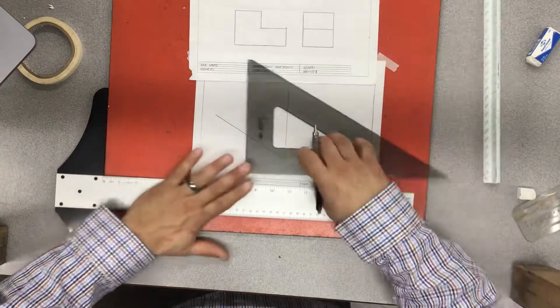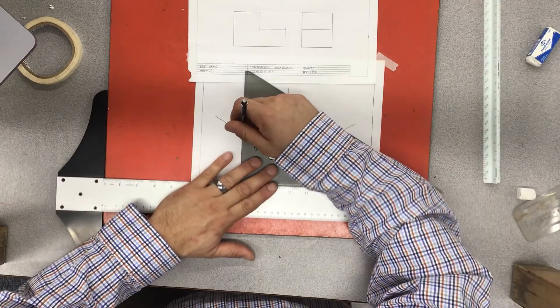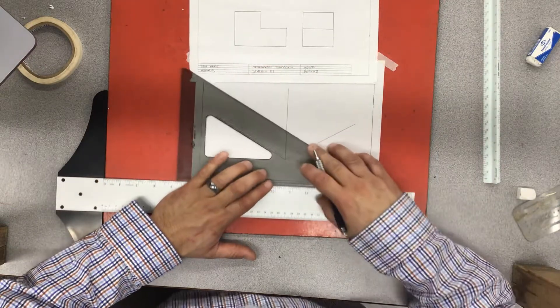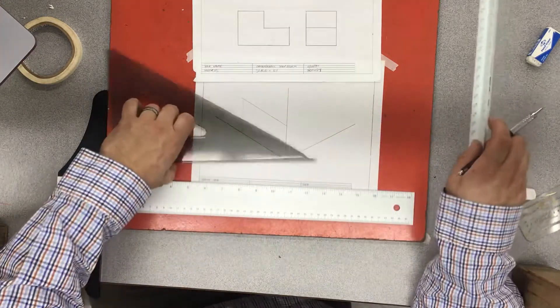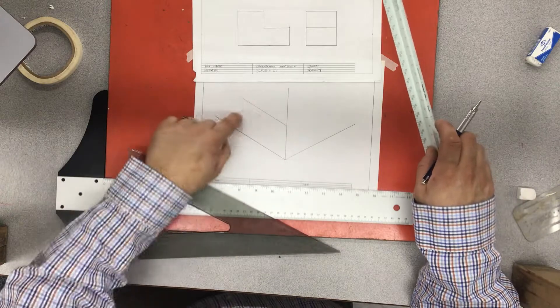Take my T-square and my triangle, and I'm going to draw a light line this way and a light line this way. I will darken them up, I promise. Just drew two lines that match up.